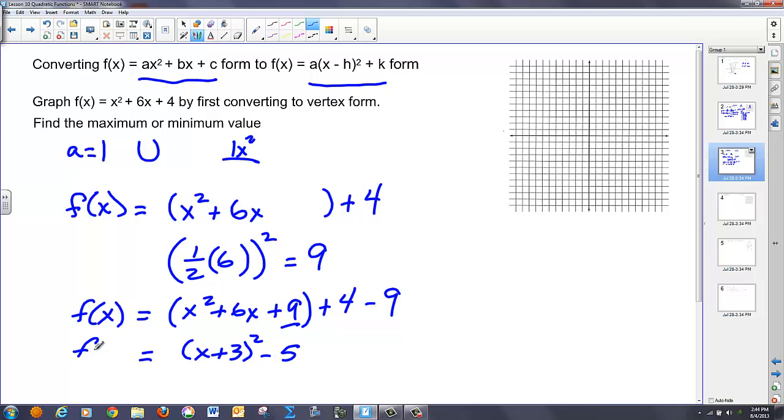So what I have is a factorable perfect square here of (x + 3)². And then, 4 - 9 is -5. So notice, I have a quadratic form that gives me an h value of -3 and a k value of -5. In other words, I move to the left and down. Given that, if I go back 3 and down 5: 1, 2, 3, 4, 5, and put my vertex there.